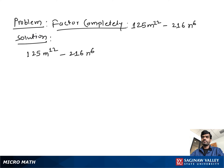So what to do? We write both terms in the form of perfect cubes. We write 125m¹² as (5m⁴)³ minus 216n⁶ as (6n²)³.